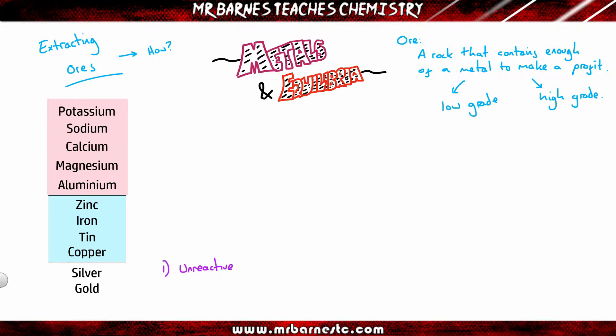First of all, we take our unreactive metals. They are silver and gold. Because they're unreactive, it means they're found uncombined. It means they don't react, so all you have to do is dig them out. If you're asked how do you extract silver and gold, you dig them out because they're unreactive, they're found uncombined.